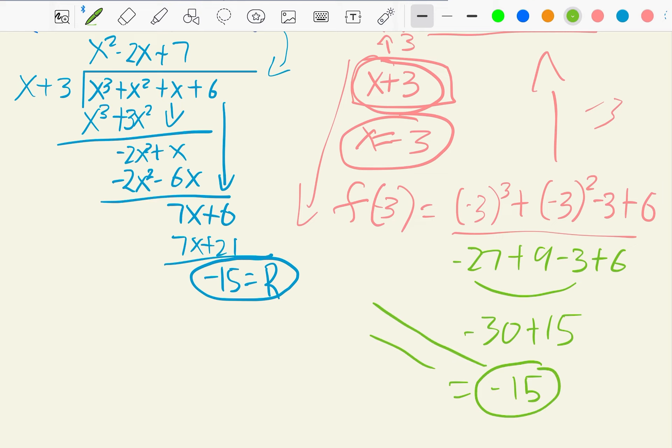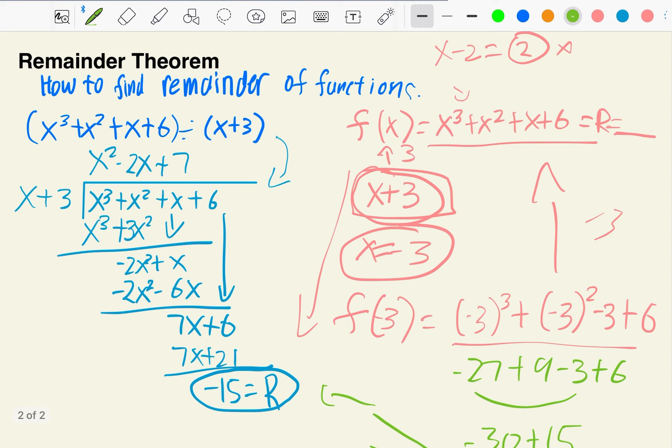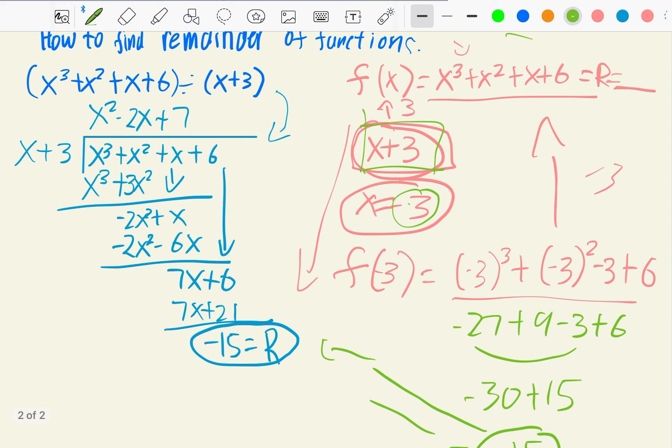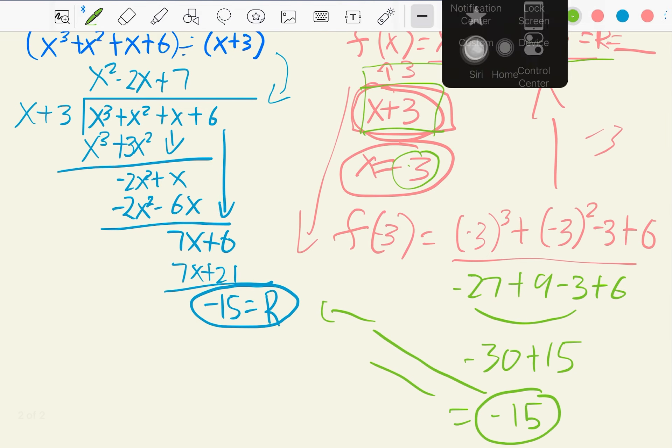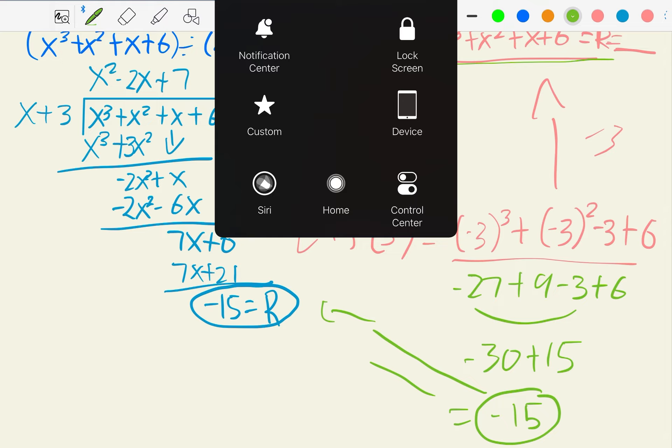So this always equals to this. Just remember that this x plus 3, or whatever it is, it could be x minus 2, it has to be so this equals zero. So after this, just plug it in into the dividend, basically. Plug it in into the dividend, and then you can get the remainder. And that's it on the remainder theorem.